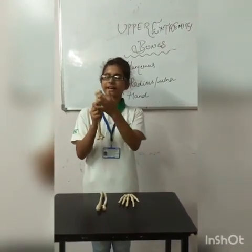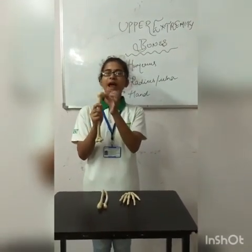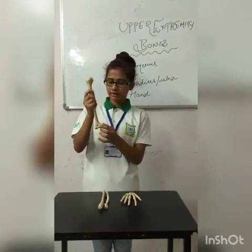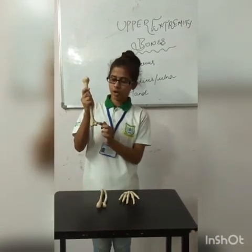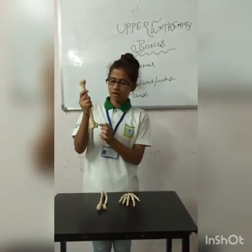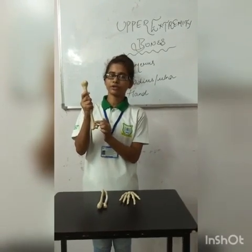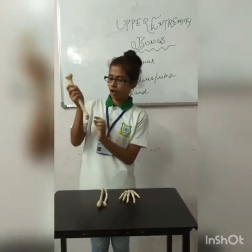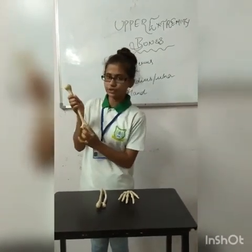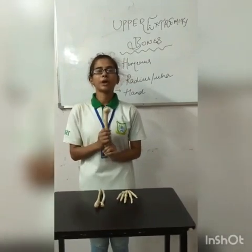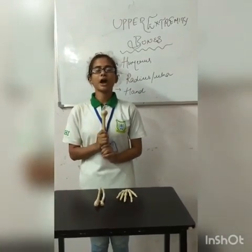There is greater tubercle and lesser tubercle. And there is capitulum, trochlea, radial fossa, coronoid fossa and olecranon fossa. It is all about humerus.